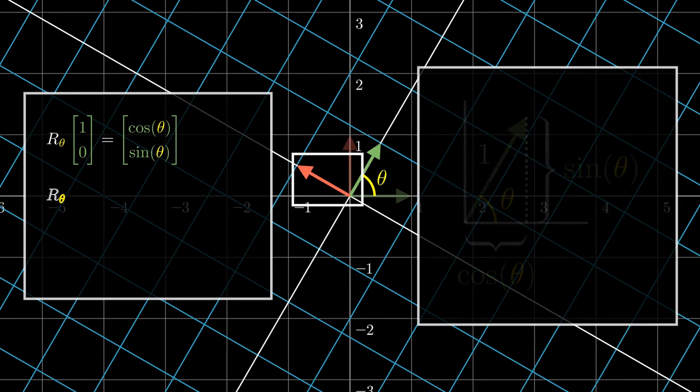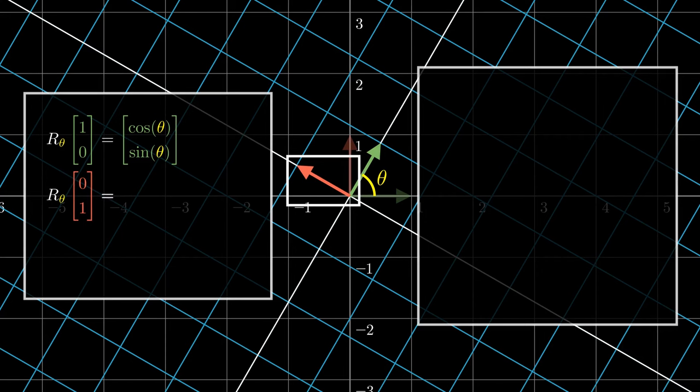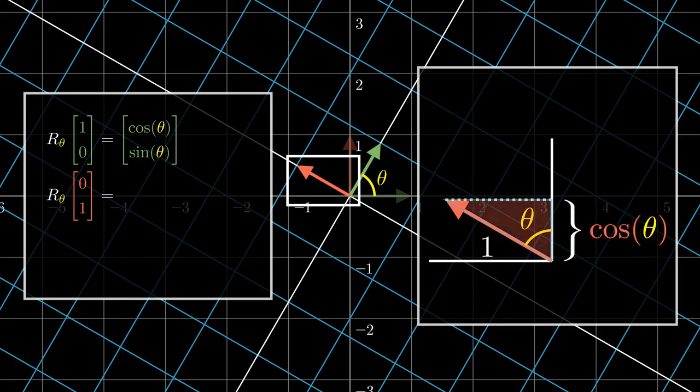Let's likewise analyze the result of the rotation on the red vector. This vector makes an angle of theta with the positive y-axis this time around. It has length of 1, and therefore its y-coordinate is given by cosine of theta. On the other hand, by considering the sine opposite to theta, its x-coordinate is the sine of theta. But more precisely, since this vector is pointing towards the left, the x-coordinate is given by the negative of sine of theta.